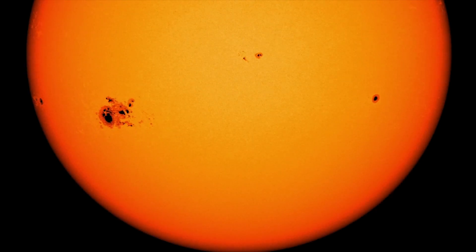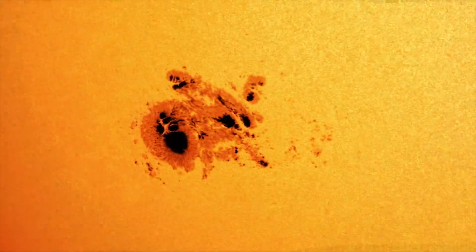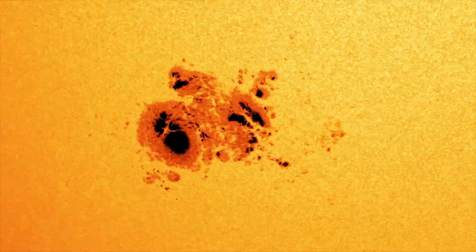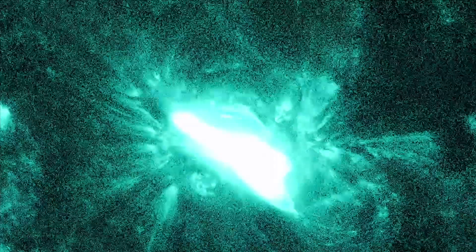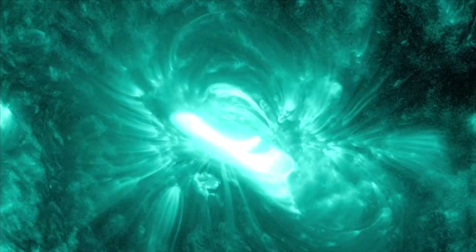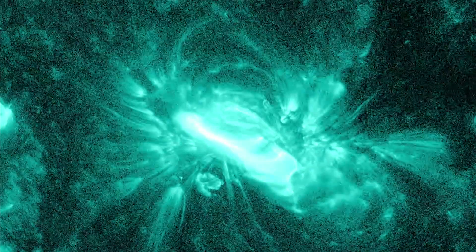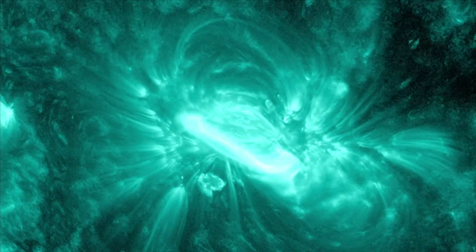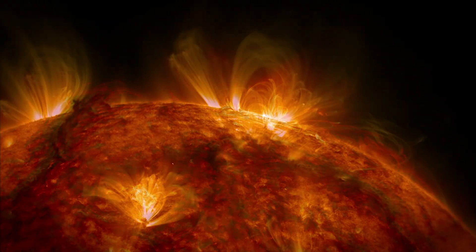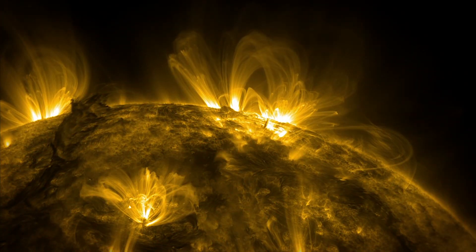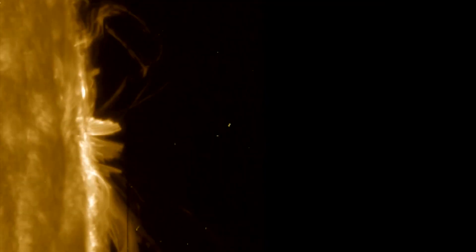Sunspots are dark, cooler regions in the surface of the Sun, the photosphere. The center of a sunspot, called the umbra, has a temperature of around 3700 Kelvin, while the surrounding photosphere has a temperature of 5800 Kelvin.